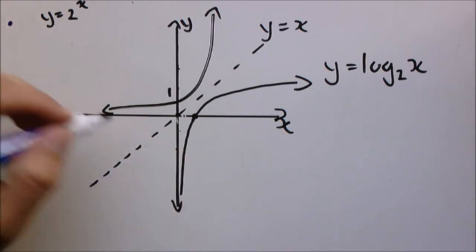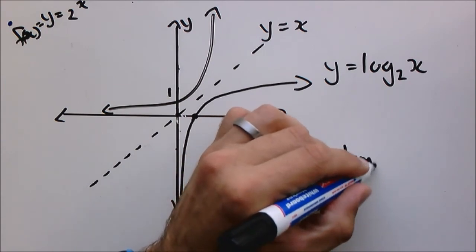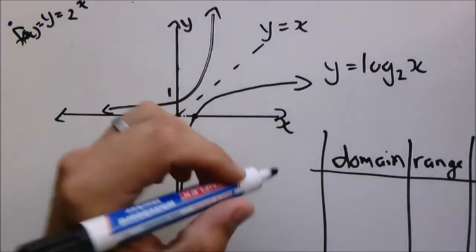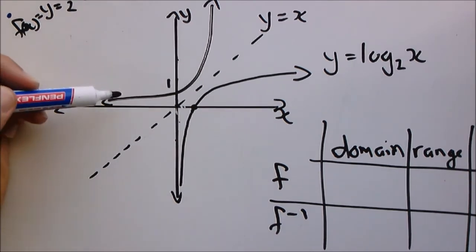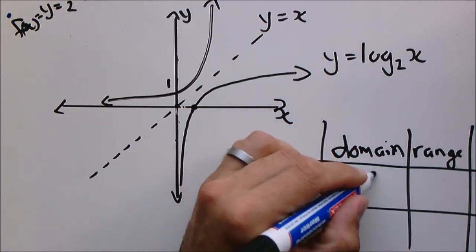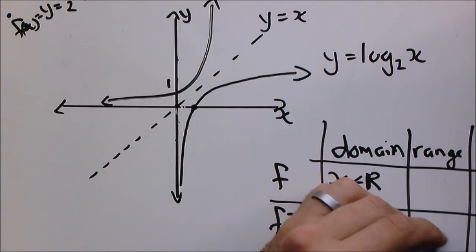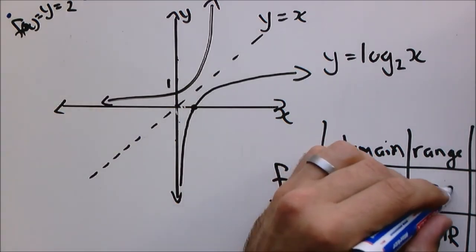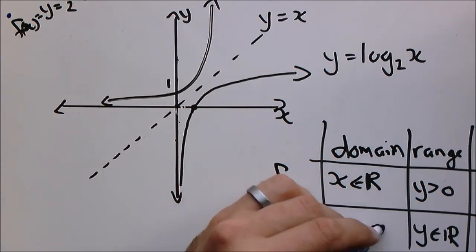Let's look at the domain and range. For the exponential function f(x), the domain is x ∈ ℝ. The range for the exponential function is y greater than 0. For the inverse function, the domain becomes x greater than 0, and the range becomes y ∈ ℝ — since the domain and range swap for an inverse.